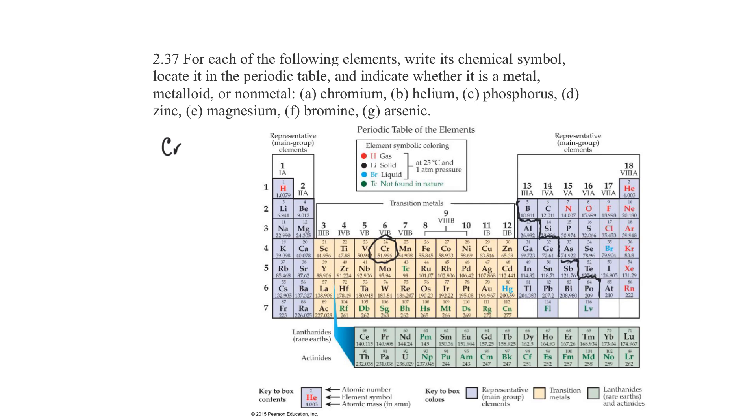Anything to the right is a non-metal. Anything touching the stairs with a flat side is a metalloid. So chromium has to be a metal.